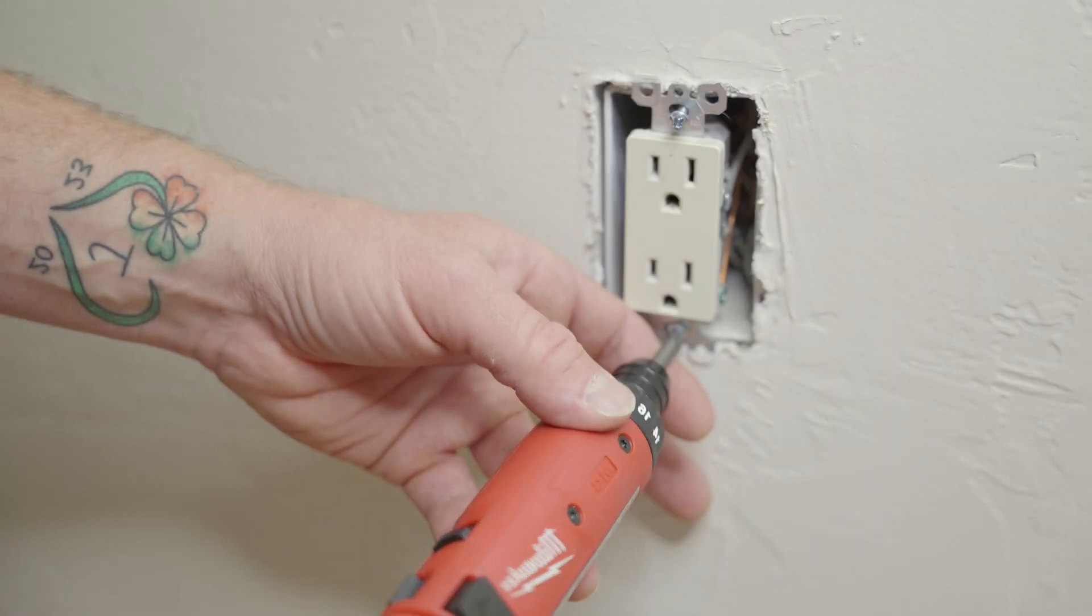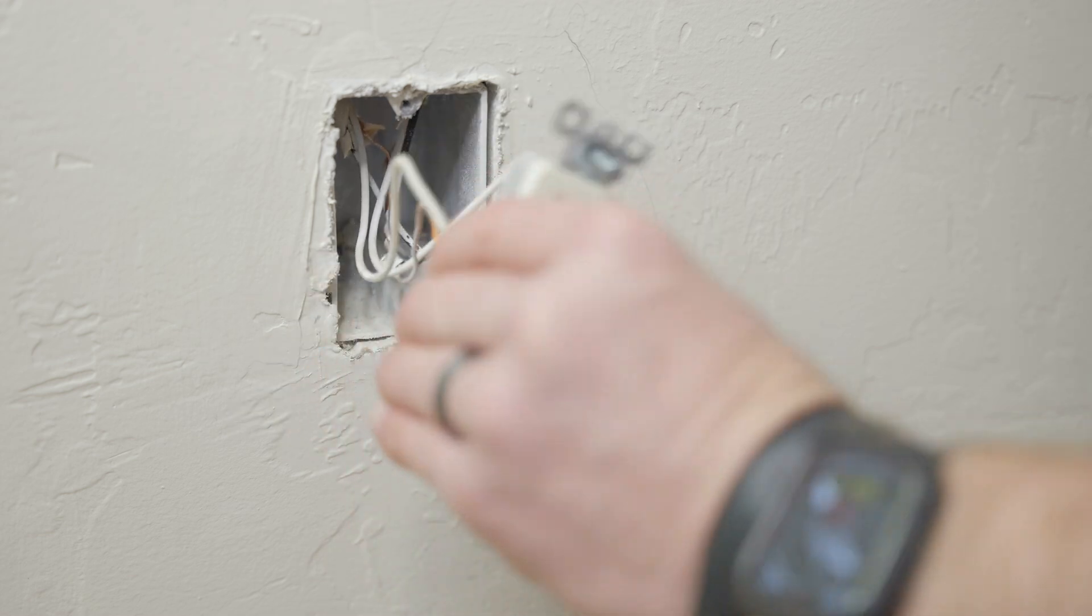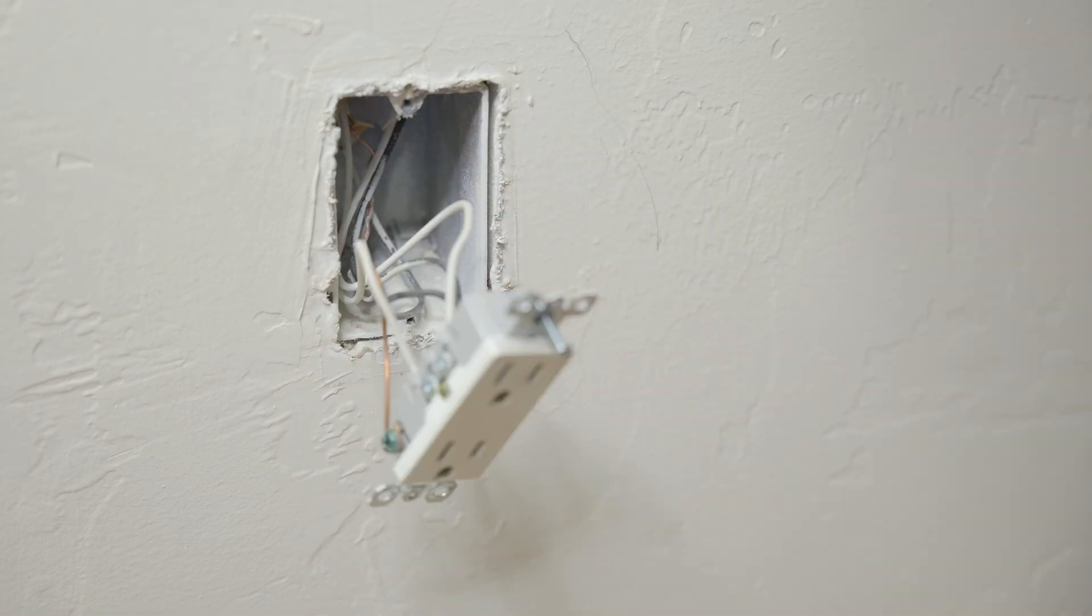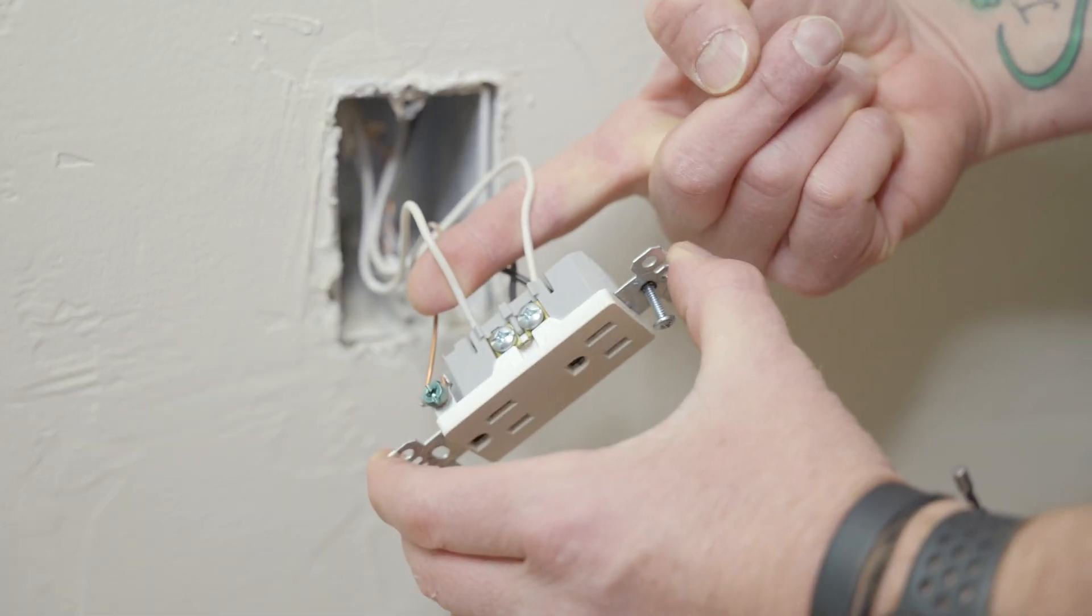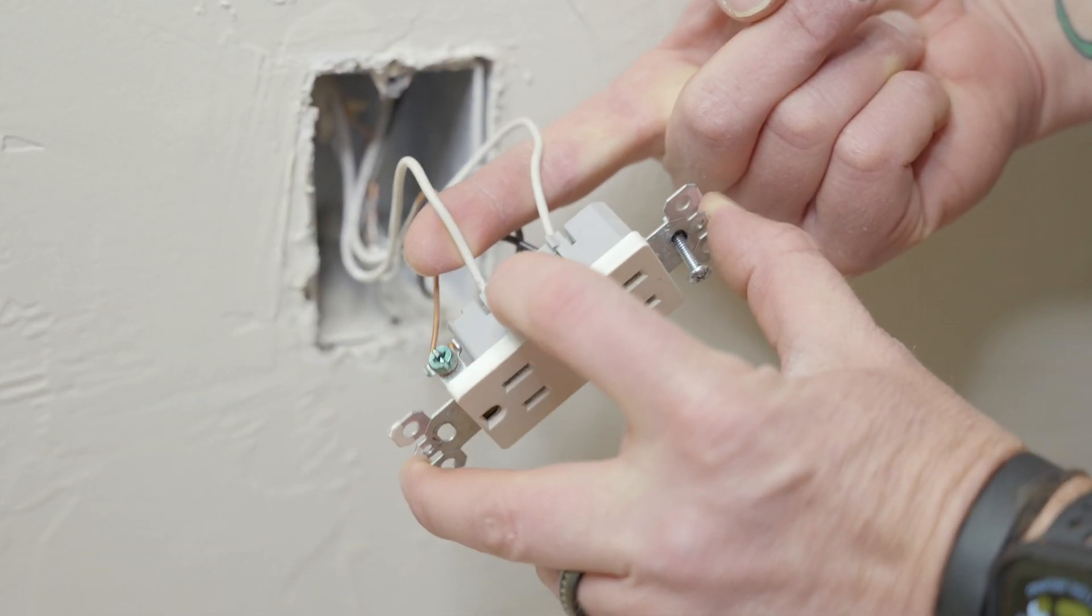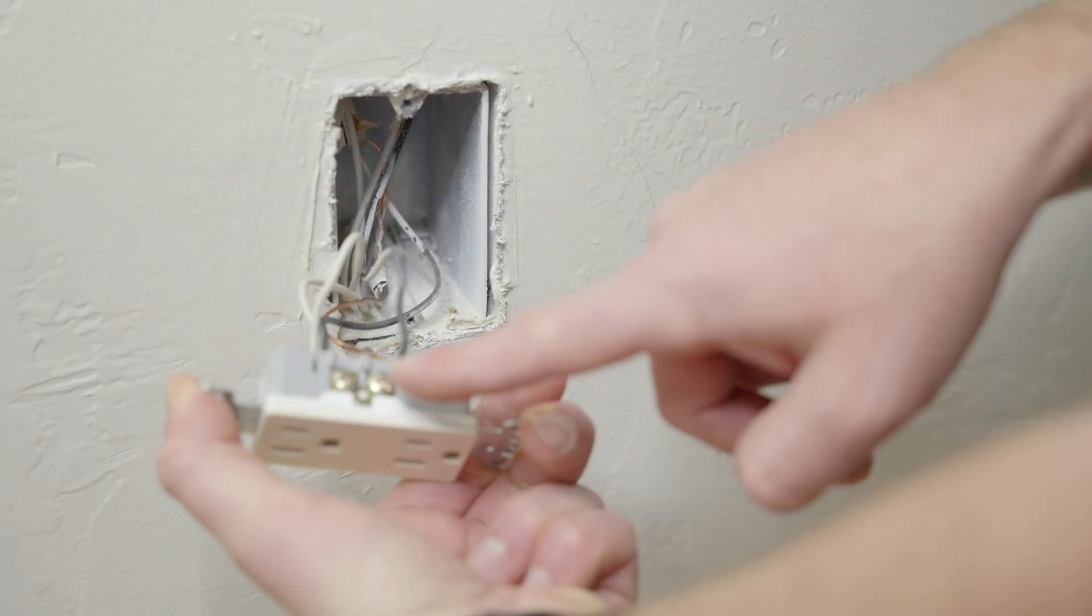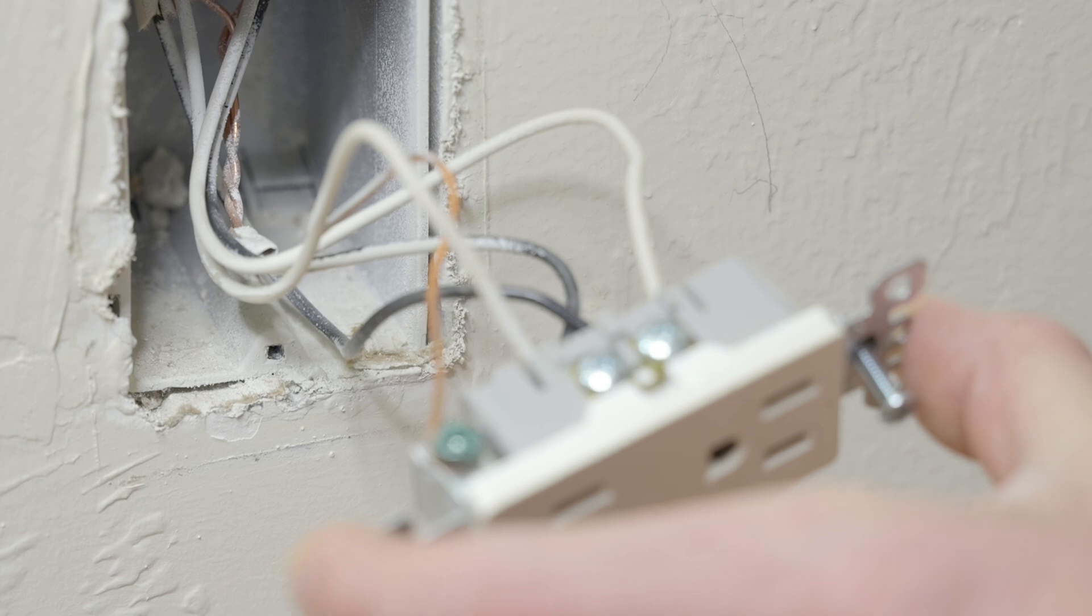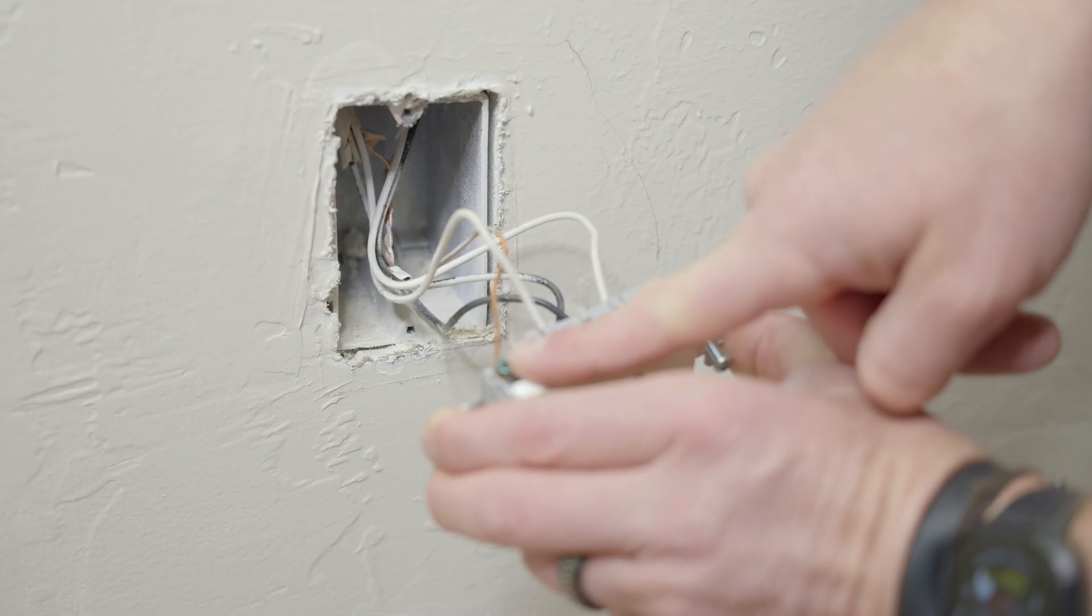We'll remove the actual outlet. We'll pull it out of the box so we can gain access to all the terminals. Before we unhook anything it's a good idea just to get a good reference of what's on which side. So the white neutral wires are on our silver screws and our black hots of course are on our brass screws here. And of course we have our ground copper on our green ground load.